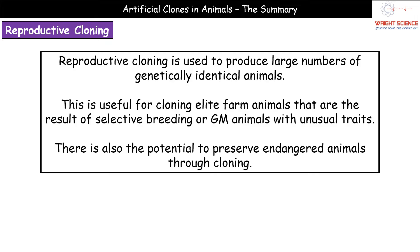It could be that within their milk they produce something unusual. There is another use of reproductive cloning, which is our potential to actually preserve endangered animals. If we've got an animal that is obviously quite endangered, we don't want to rely purely on natural reproductive processes, because that means they might still end up going extinct. Using reproductive cloning, we could potentially produce larger numbers and therefore protect the species from extinction.